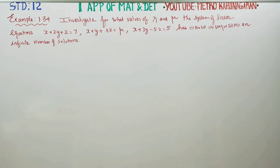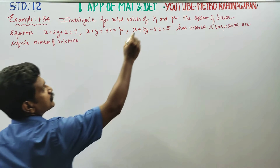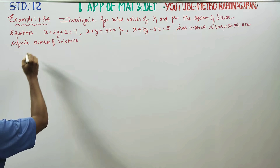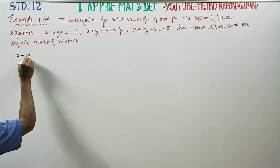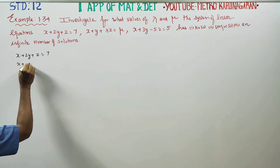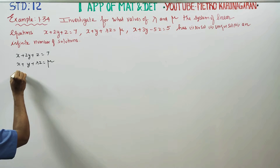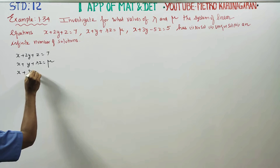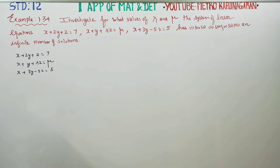Dear 12th standard students, I am Metro Karnagaran. In Applications of Matrices and Determinants, Example 1.34, you have to investigate the values of lambda and mu. First of all, you have to line up the equations: x plus 2y plus z is equal to 7, then x plus y plus lambda z is equal to mu, and x plus 3y minus 5z is equal to 5.